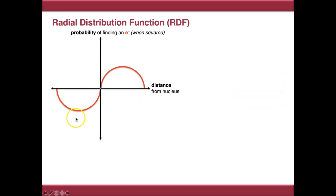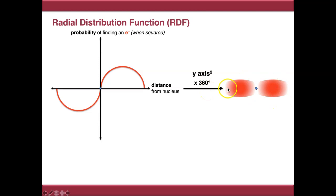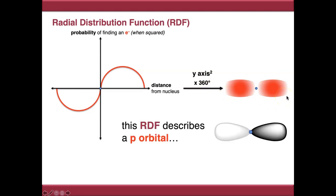If our radial distribution function crosses the x-axis at zero — this is called a node — then squaring the y-axis again and rotating through 360 degrees gives us an orbital that looks like this. This is a p-orbital, and you can see that in a p-orbital you've got both phases in the same orbital.